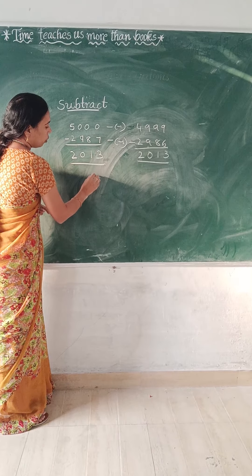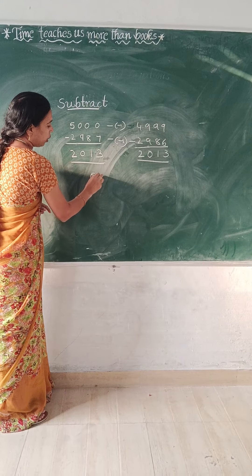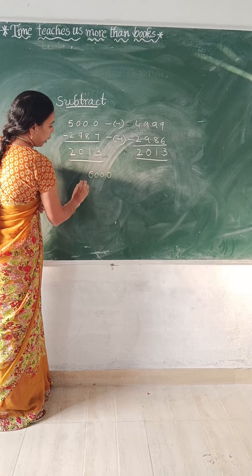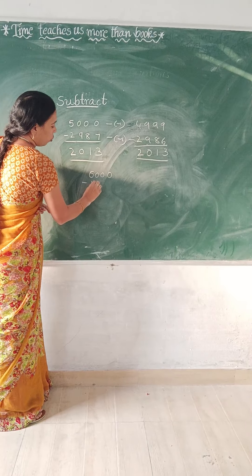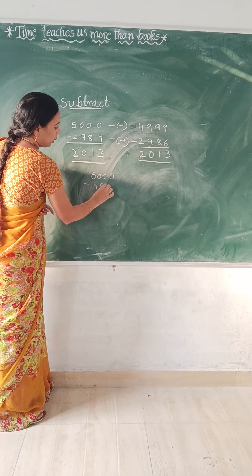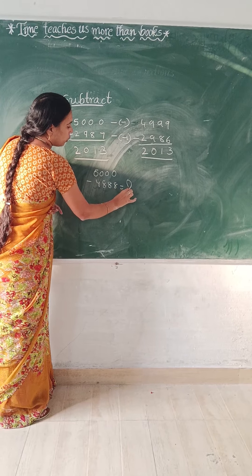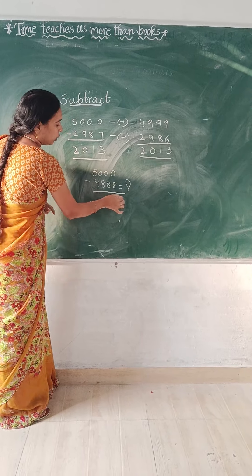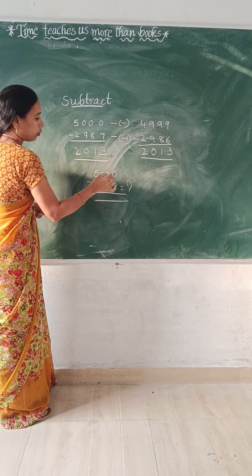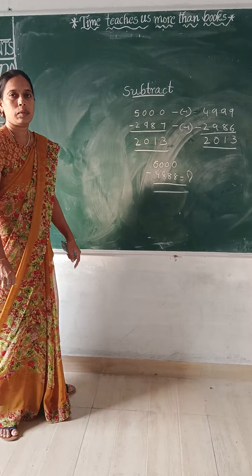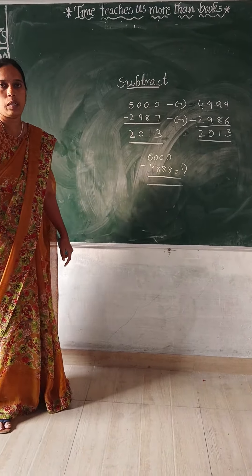6,000 minus 4 equals 2,018. 2,018 — all marks. Good job!